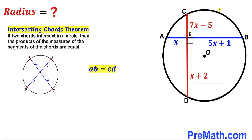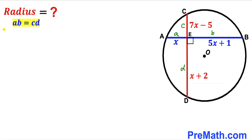In our case, we have chords AB and CD intersecting at point E. Labeling the segments as lowercase a, b, c, and d, and filling in the formula: a is x and b is 5x plus 1, equals c which is 7x minus 5 times d which is x plus 2.